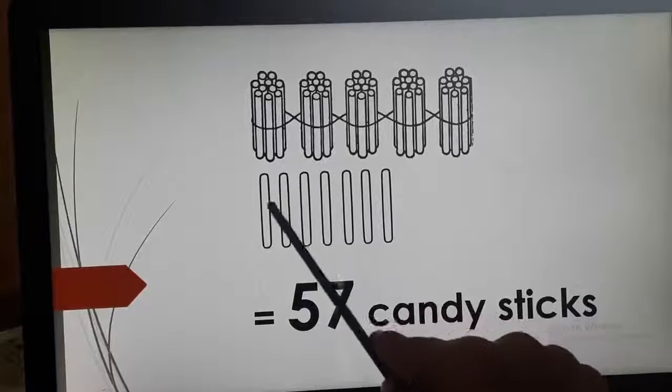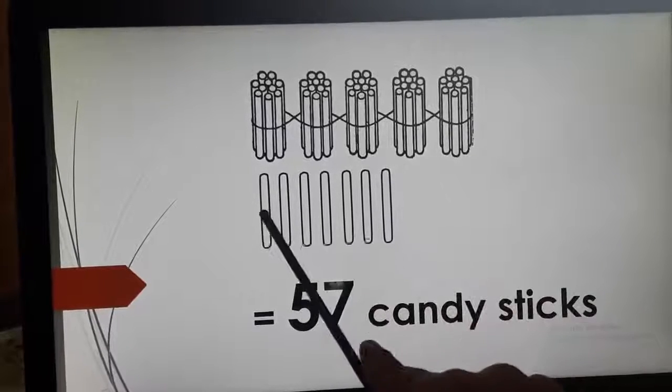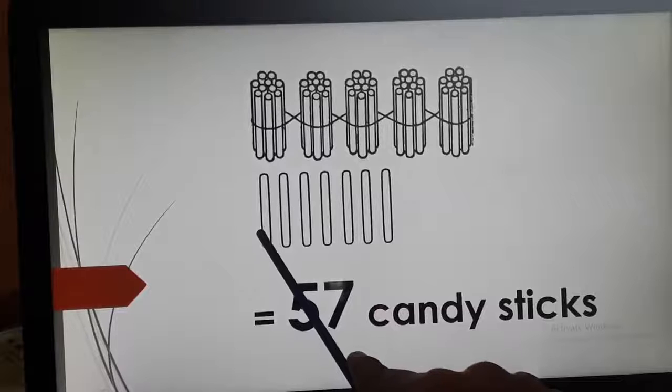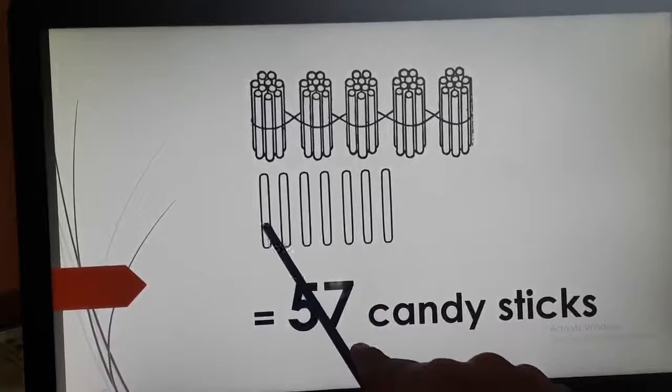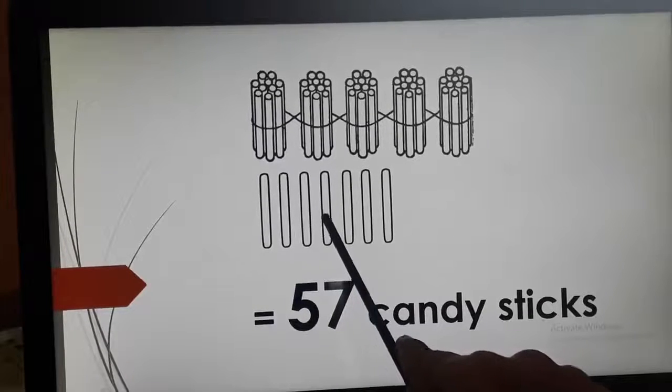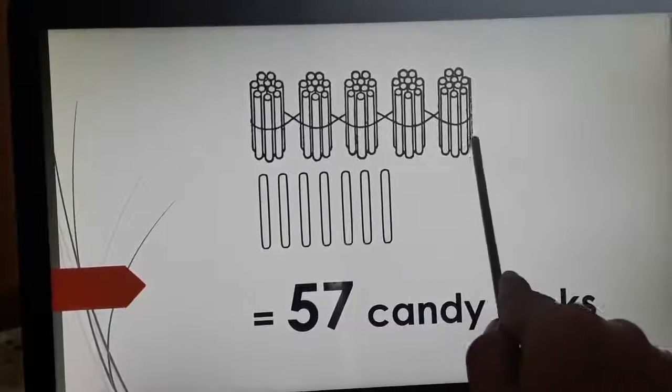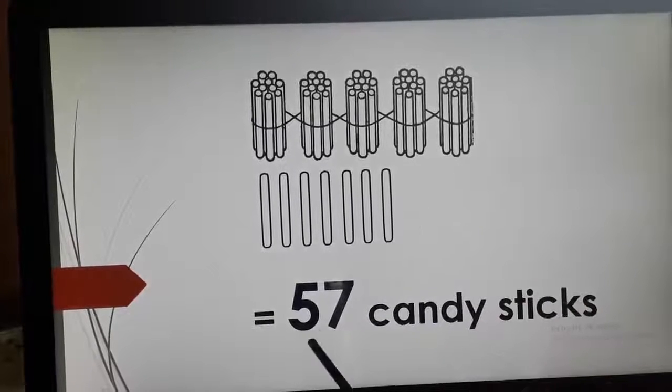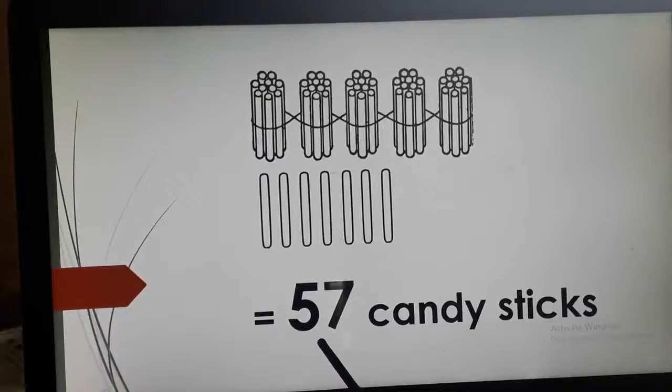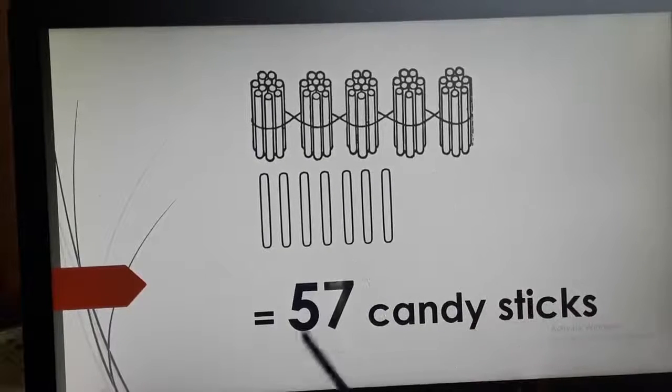Now, here 50 candies are already there and let's count how many more are given. 1, 2, 3, 4, 5, 6 and 7. So, 50 and 7, how much? 57. 50 and 7, 57.